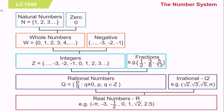What are real numbers? Real numbers are simply the combination of rational and irrational numbers in the number system. For rational numbers, we have integers and fractions. Under integers, we have whole numbers and negatives. For whole numbers, we have natural numbers and zero. Real numbers are simply the combination of rational and irrational numbers.